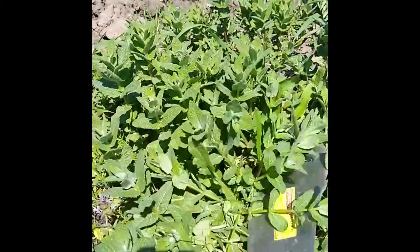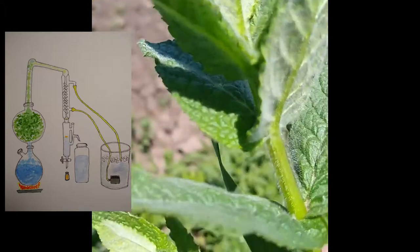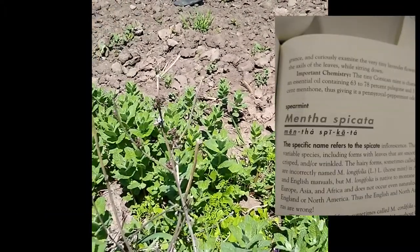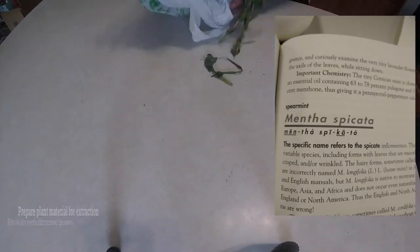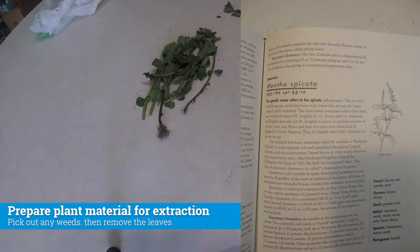Today we'll walk you through the entire process of using steam distillation to extract essential oil from fresh mint leaves. More specifically, we'll be working with mentha spiccata or spearmint as it's commonly known. We start the process by harvesting some fresh plant material.